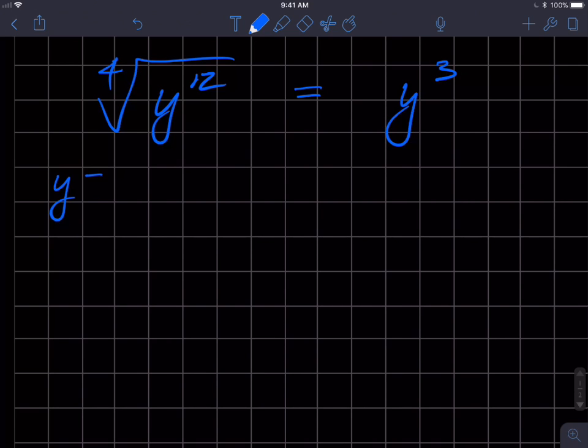So why is this the case? Well, if I put y equals negative 1 into this expression, I'll do the substitution: negative 1 to the 12th. Since that's an even exponent, negative 1 multiplied 12 times, I'm gonna get a positive 1.